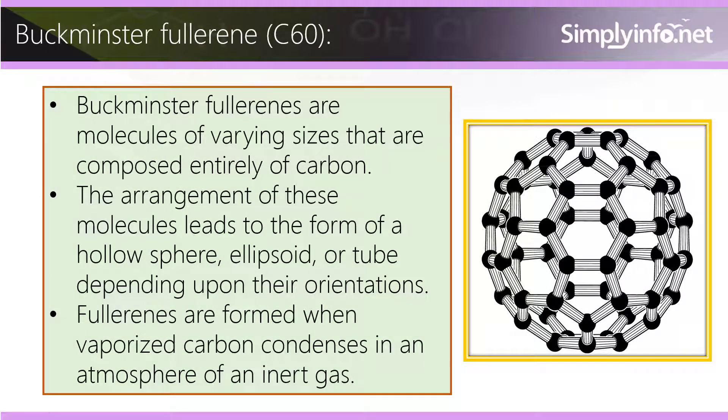Buckminster Fullerenes are molecules of varying sizes that are composed entirely of carbon. The arrangement of these molecules leads to the form of a hollow sphere, ellipsoid, or tube depending upon their orientations. Fullerenes are formed when vaporized carbon condenses in an atmosphere of an inert gas.